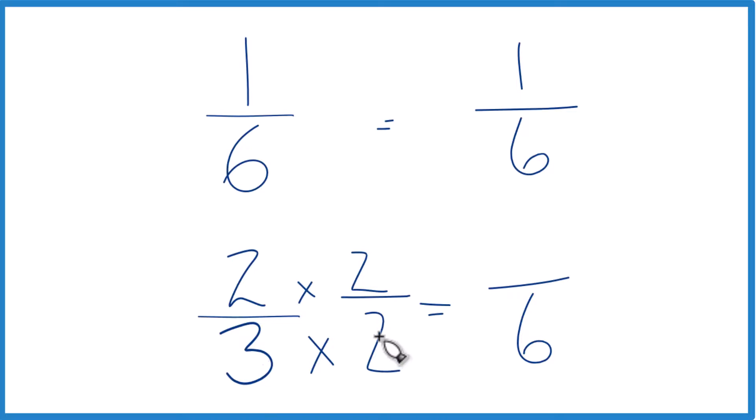2 over 2 is 1. So we're just multiplying by 1. We don't change the value, just the way it's represented. 2 times 2, that is 4. And 4/6, that's the same as 2/3.